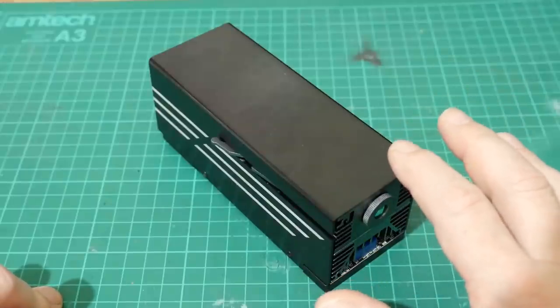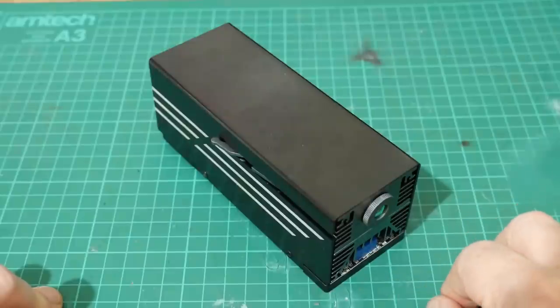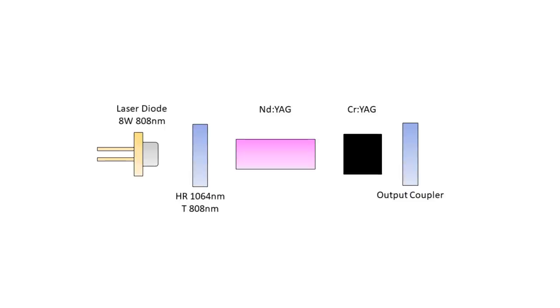I'm sort of loath to tear this down at this point so I've created a diagram so we can see how this thing works. I've put together a diagram here based on the specifications from the manufacturer's website. On the left hand side we've got a laser diode that's rated at 8 watts at 808 nanometers and this is our pump diode.